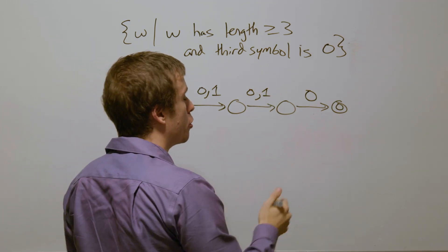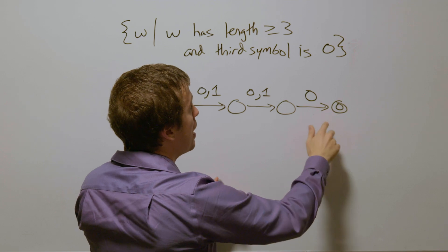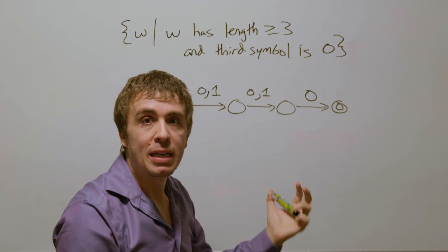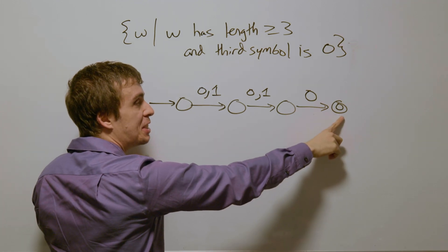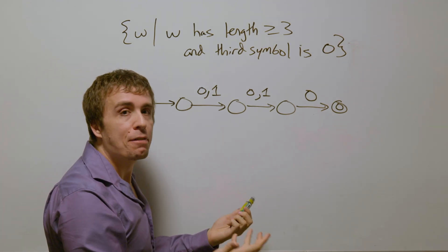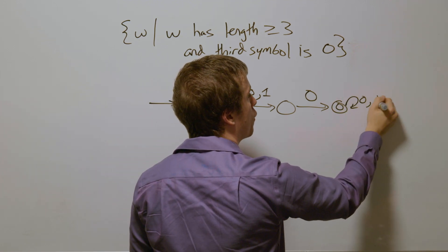Now let's think about the other transitions. If we have this third symbol be a zero, it doesn't matter what the rest of the string is because the language doesn't specify anything about it. So this last state can have anything after it and still be accepted. Therefore, we're going to self loop on that.